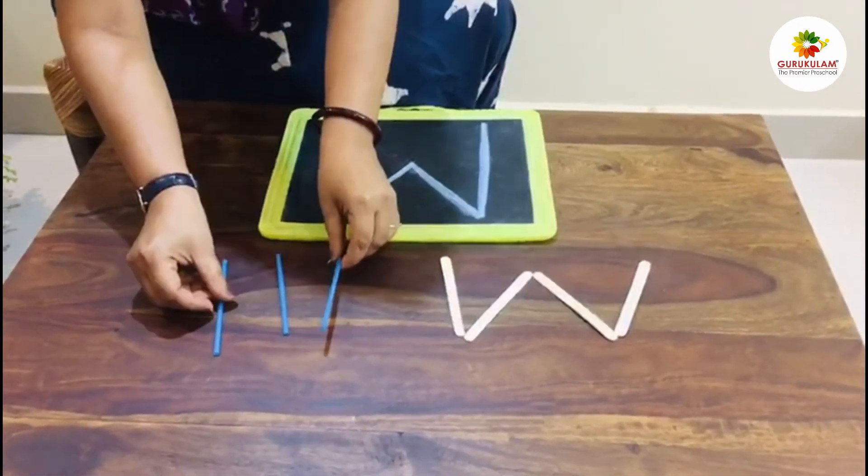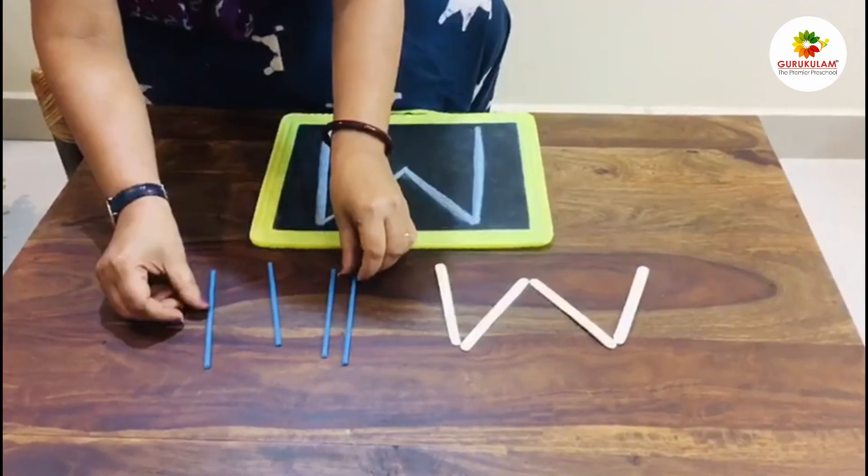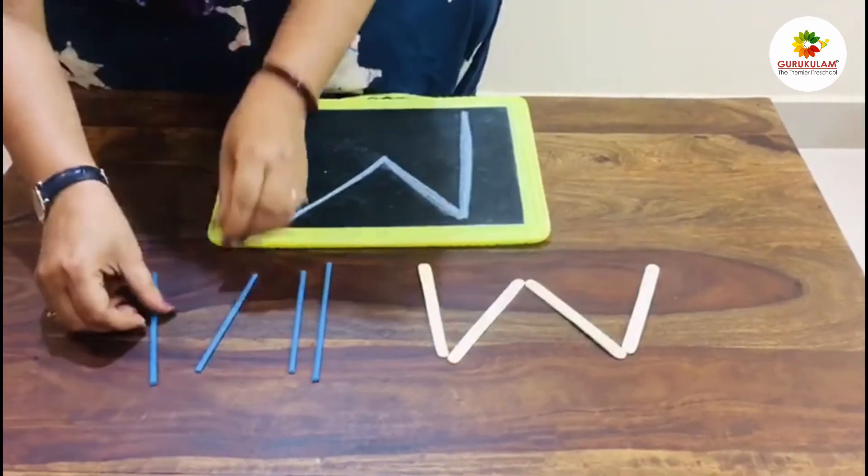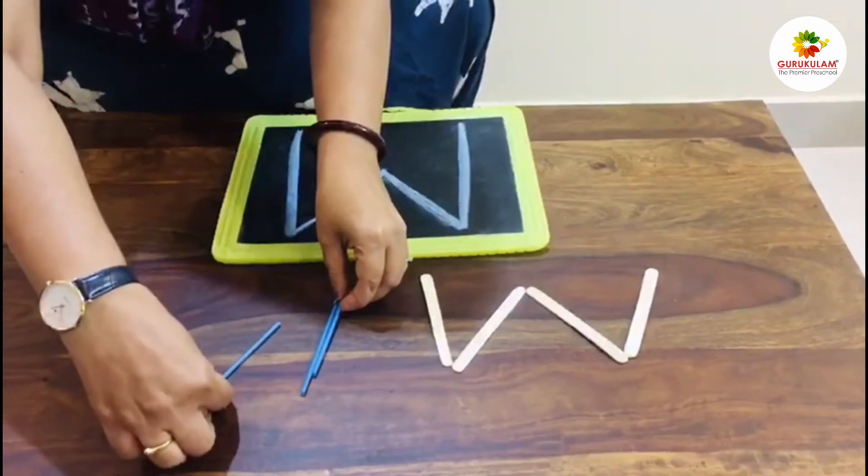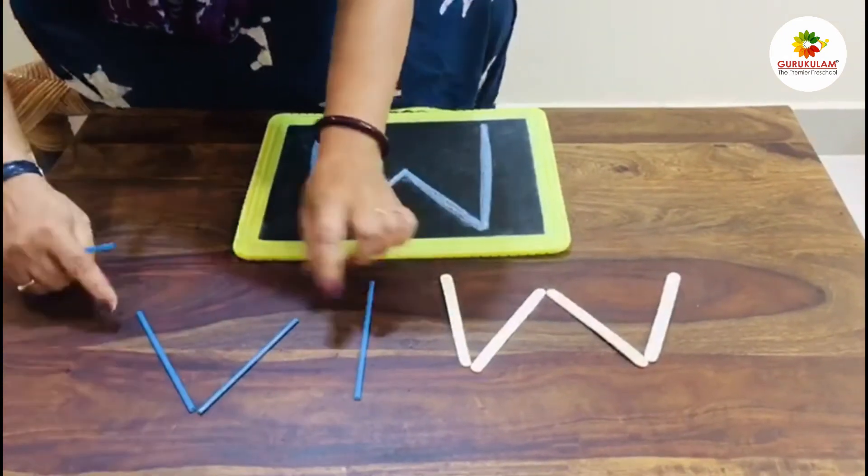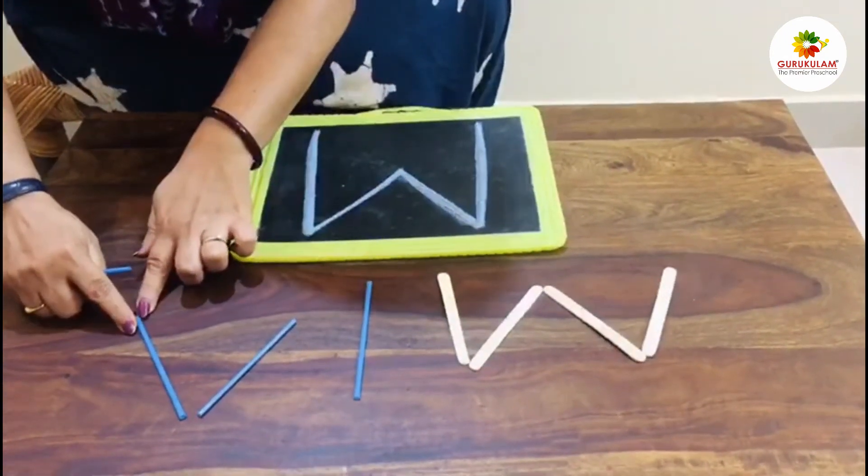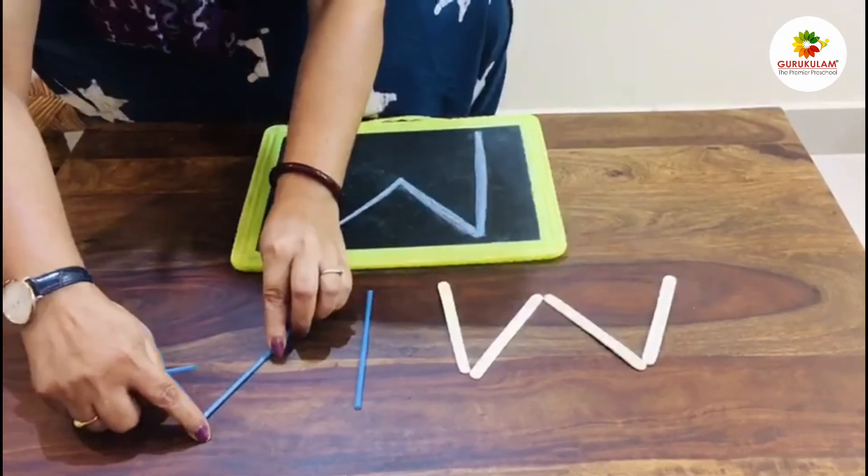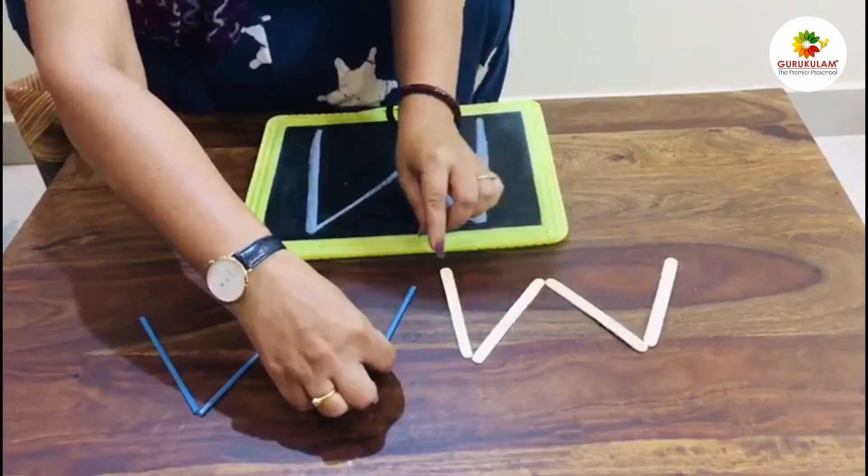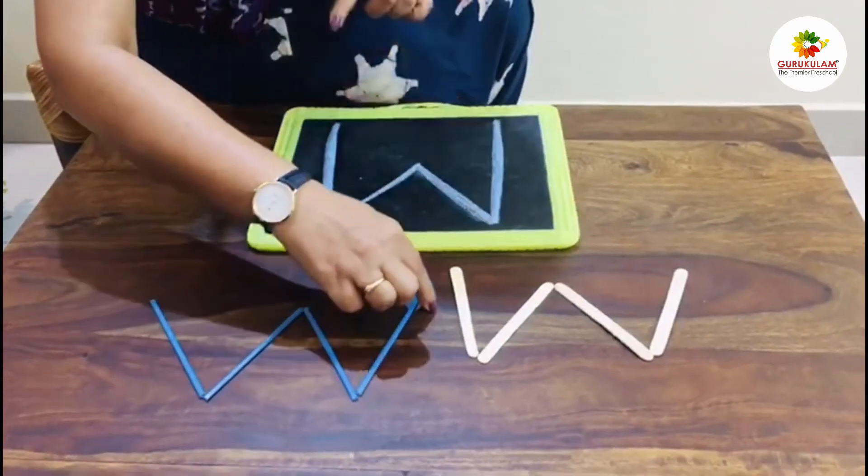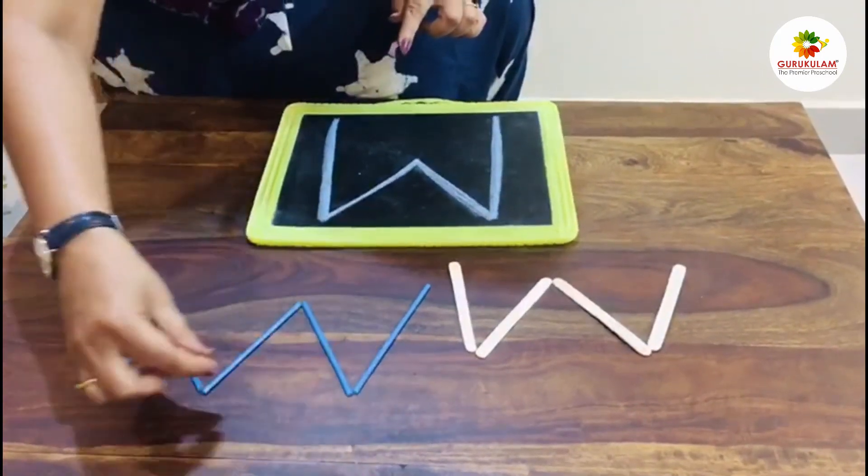I have four straws. With help of straws I will make alphabet W. One slanting line, one more slanting line. First slanting line up to down, then down to up, again up to down and down to up. This one W.